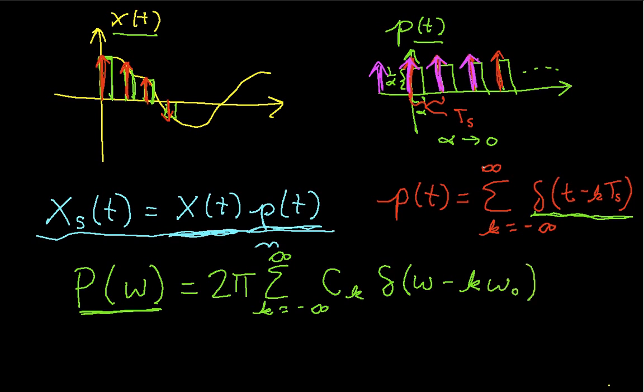Of the Fourier series coefficient c sub k times delta of omega minus k omega 0. Again, that's the fundamental frequency. So, again, what this is saying is that a periodic signal in the frequency domain has, it looks like a series of impulses where each impulse is at an integer multiple of the fundamental frequency.